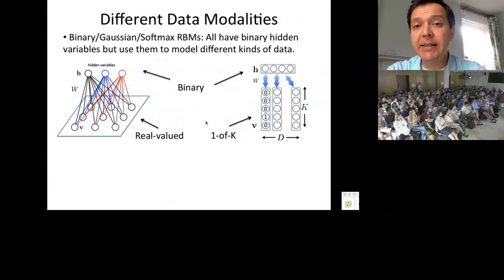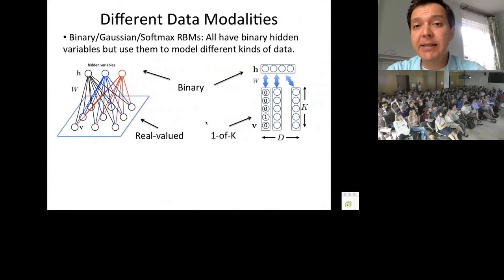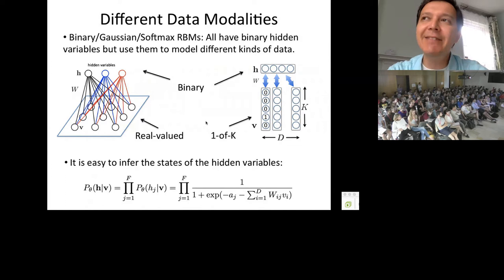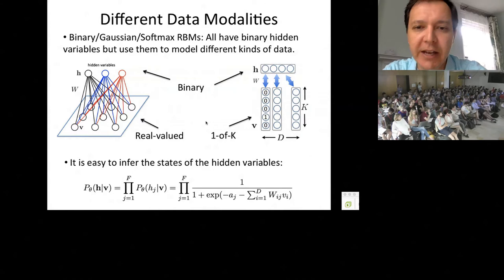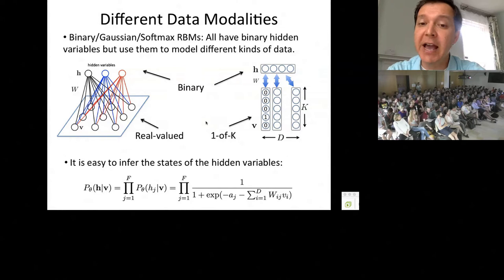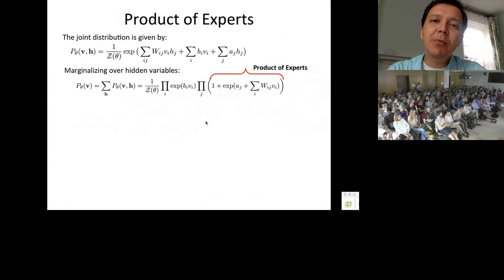You can model different modalities — binary, Gaussian, softmax. An important property of this class of models is that inference of hidden variable states is easy: the posterior probability is a product of logistic functions, coming directly from the undirected graph structure. This is very different from Bayesian directed models where you must compute a posterior over latent variables, which can be computationally intensive. For RBMs, computing the posterior is done in closed form and very efficiently, which is important for tasks like information retrieval and classification.